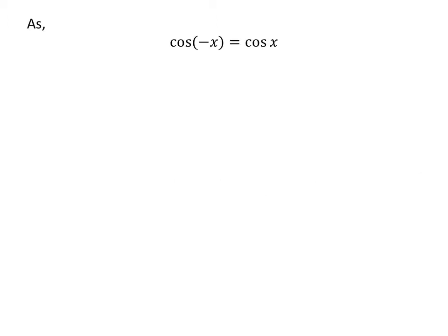As we know, the trigonometry identity cosine of minus x is equal to cosine of x. The video explaining how to derive this identity is appearing in the upper right corner, and the URL address of the video has been mentioned in the description section.